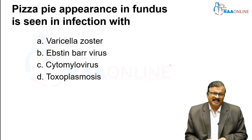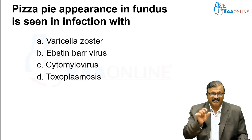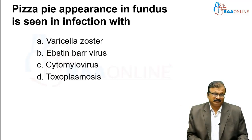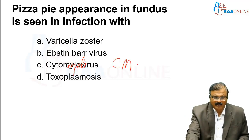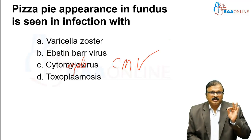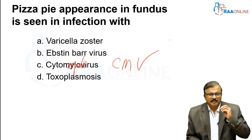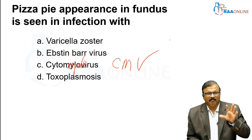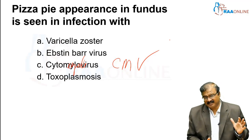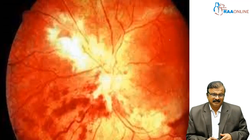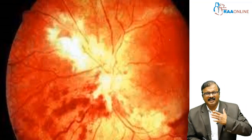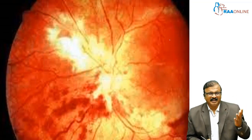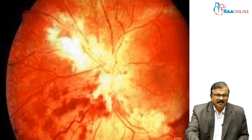Pizza pie appearance in the fundus is seen in which infection? The answer is Cytomegalovirus. This is one of the specific fundus pictures of CMV. It is basically hemorrhagic lesions inside the retina with varied involvement of the fundus. There can be papilledema and vascular attenuation. You can see the hemorrhagic lesions seen in the fundus.